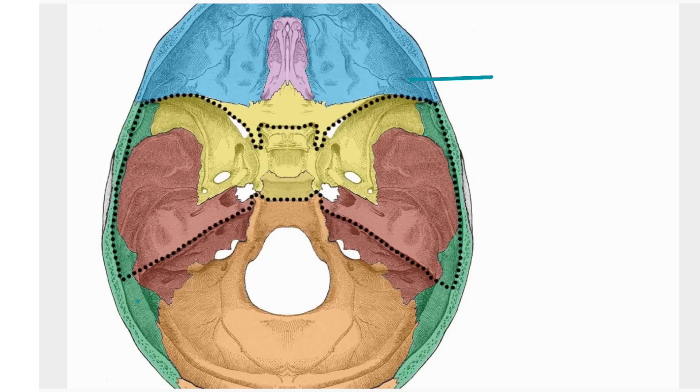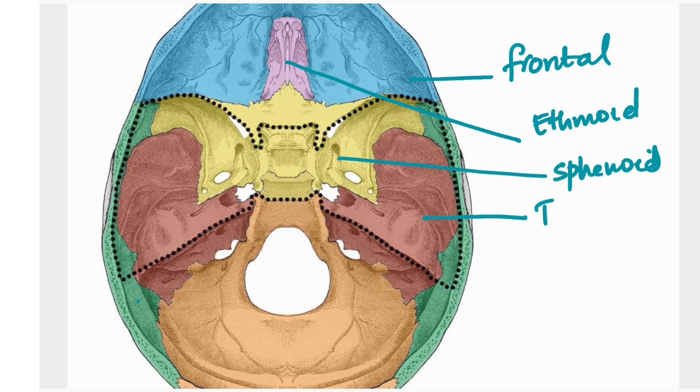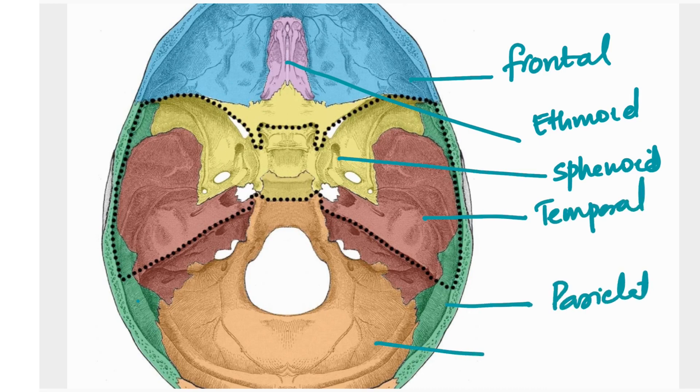So let's look at the middle cranial fossa. This blue area is the frontal bone. This right here is the ethmoid, the small one. Sphenoid, the bat shaped is the yellow. Yes, this brownish red is temporal. Parietal green and this orange is occipital. So you guys know all this.